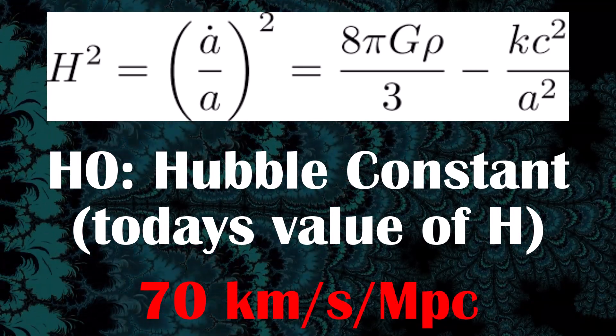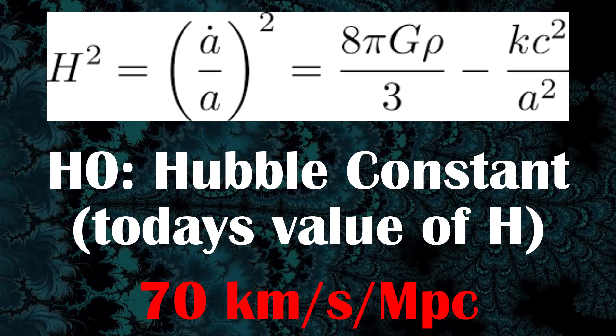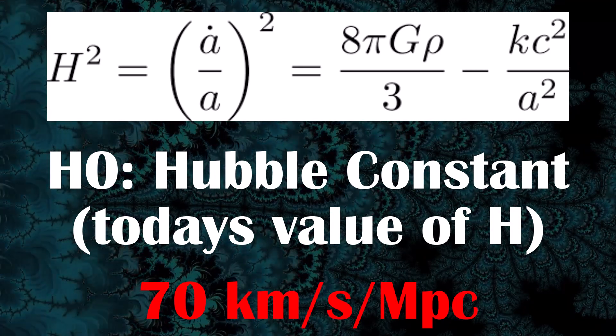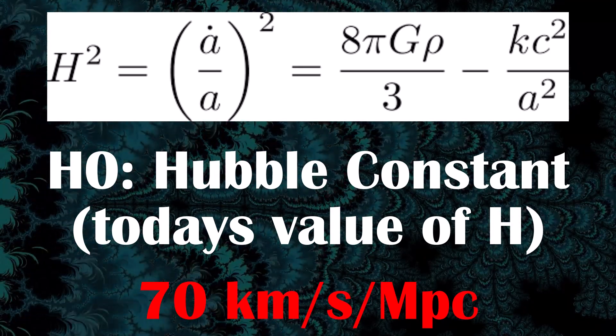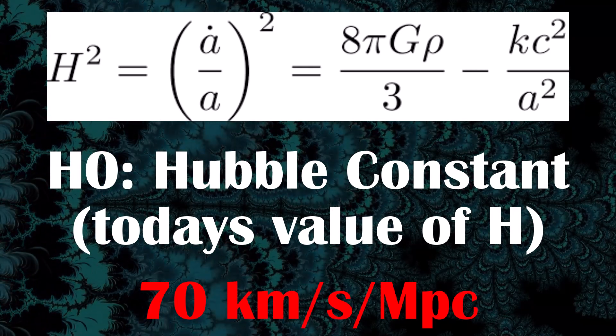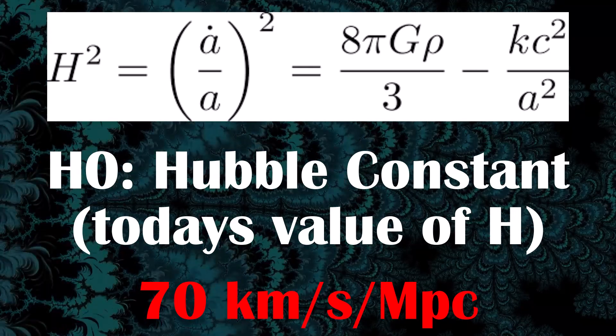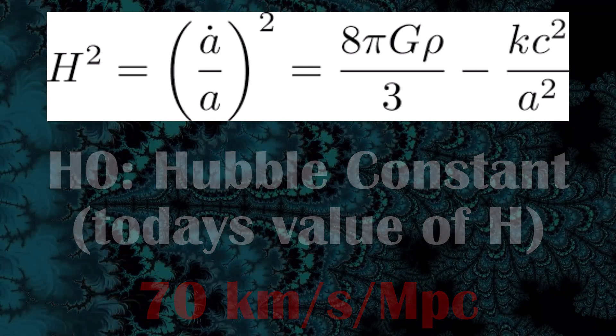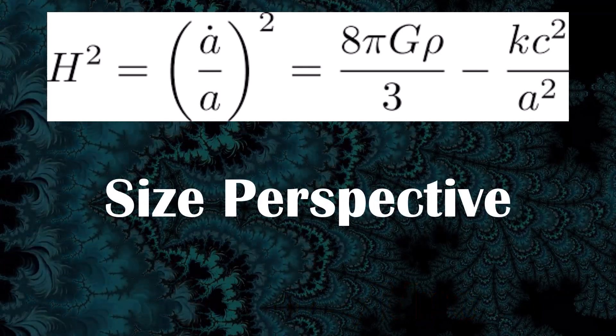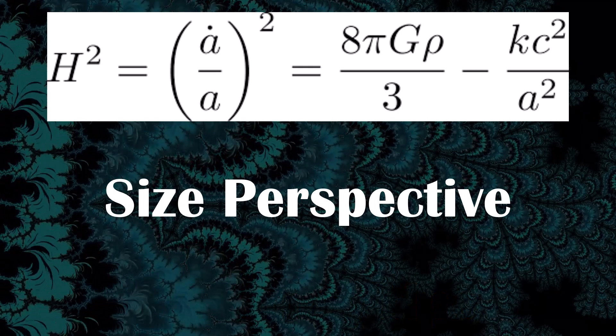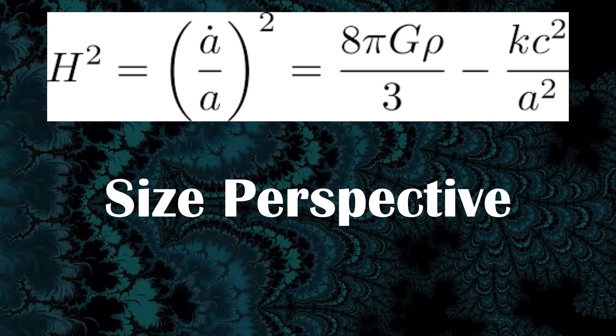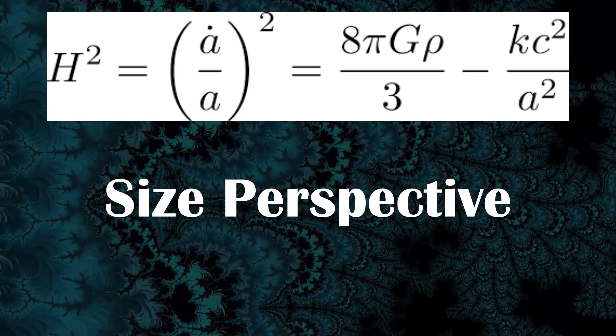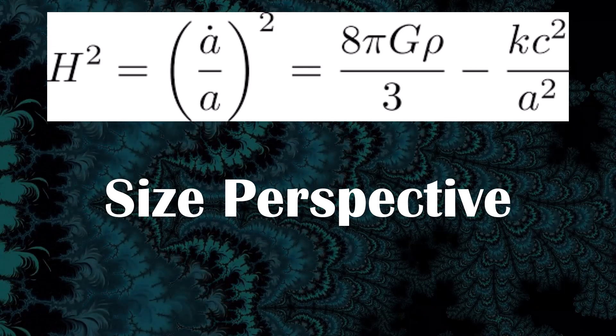This means that for every megaparsec, which is a huge distance measuring around 3 million light years, or 3 times 10 to the 22 meters, the universe itself will expand by 70km per second. This may sound quite fast. 70km per second is around twice as fast as the Earth orbits the Sun, but the key is perspective. This only occurs at entire megaparsecs away, and 70km compared to a megaparsec is mind-numbingly small, so small it's almost insignificant.